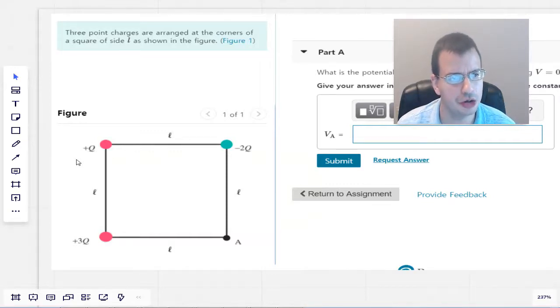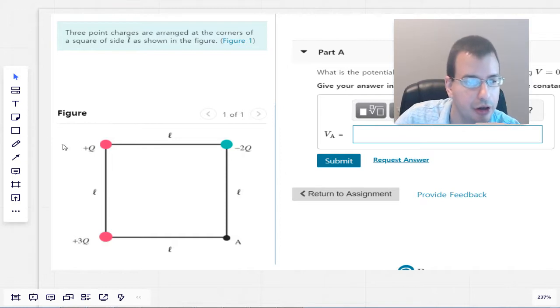Three point charges are arranged at the corners of a square of side L. Okay, that's the figure below. It didn't say below, but it's basically probably that figure. So we've got a Q, we have a plus 3Q, we have negative 2Q.